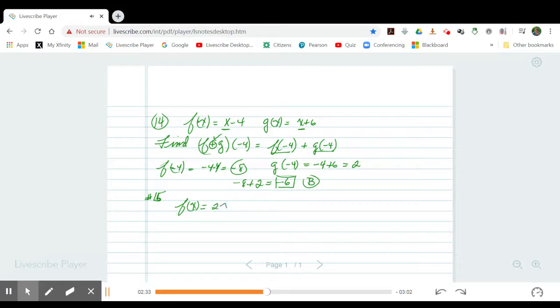f of x, defined as 2x minus 8, and g of x, defined as 6x minus 7. And what he's asking me here is to take f minus g of x. What this translates to is f of x minus g of x, just the way it's written. The f function is first, second function is g, and you're asked to subtract these two.